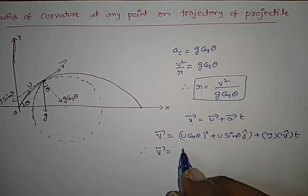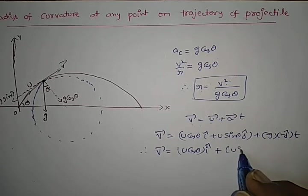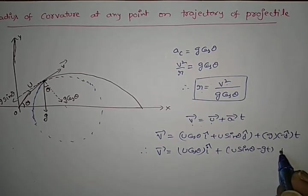Therefore, velocity after time t is given by u cos theta i cap plus (u sin theta minus g t) j cap.